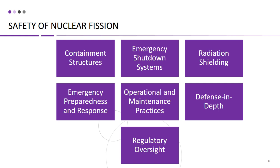Radiation shielding is an important safety measure in nuclear power plants to protect workers and the public from exposure to ionizing radiation. Shielding materials such as concrete, lead, and steel are used to absorb and block radiation emitted from the reactor and other radioactive materials. Shielding is applied in various areas of the plant, including the reactor building, control room, and spent fuel storage areas, to minimize radiation exposure to workers and the environment.